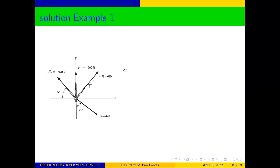Solution to example one. We are asked to find the resultant of these forces acting on the object. As you can see from the diagram, we have four forces: F1, F2, F3, and F4. We have already stated that anytime you have three or more concurrent forces acting on an object, the only possible solution is to use the method of summing components. We cannot use the triangle rules.